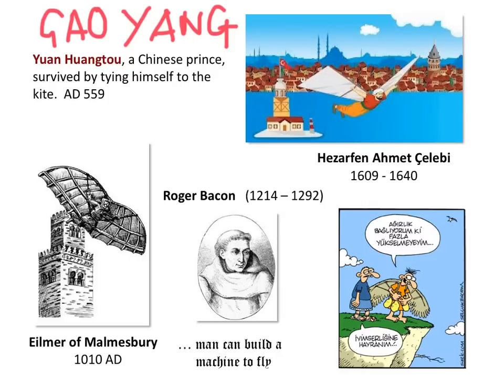During 559 AD, the Emperor Gao Yang put into prison the prince of the former emperor, called Yuan Huang To. While in prison, he was asked to be thrown from a tower. He was attached to a kite and managed to survive.